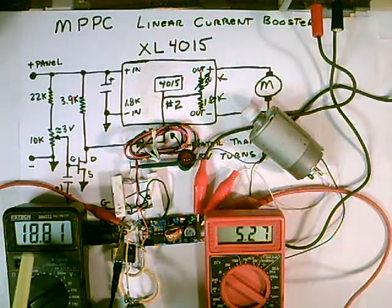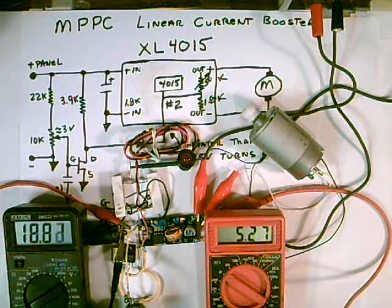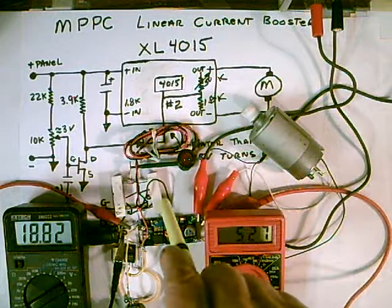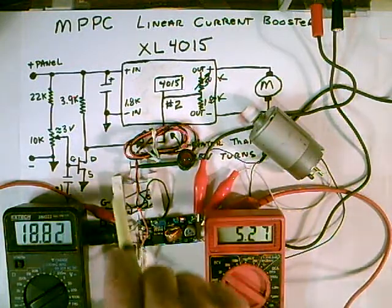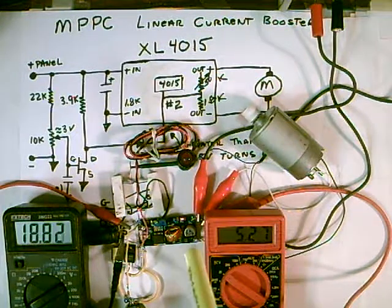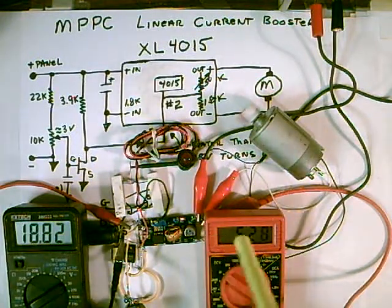As you can see right now, we've got 18.8 volts in. This is coming from a power supply supplying 19 volts. These resistors simulate the solar panel. As you draw more current, the panel voltage will drop.